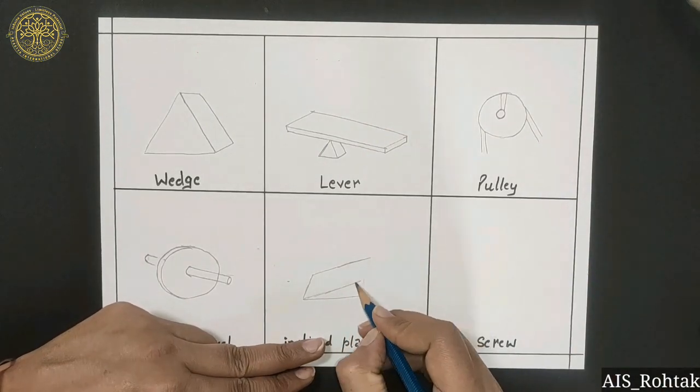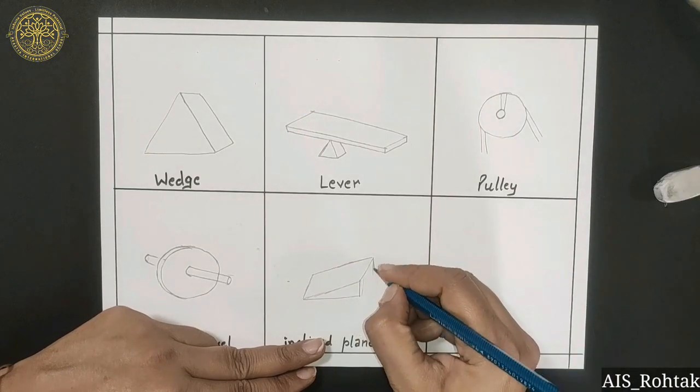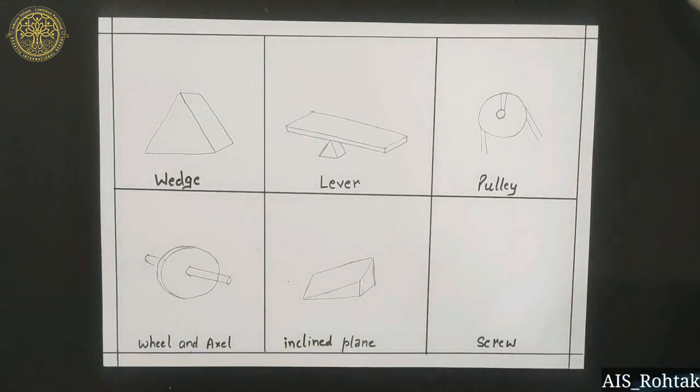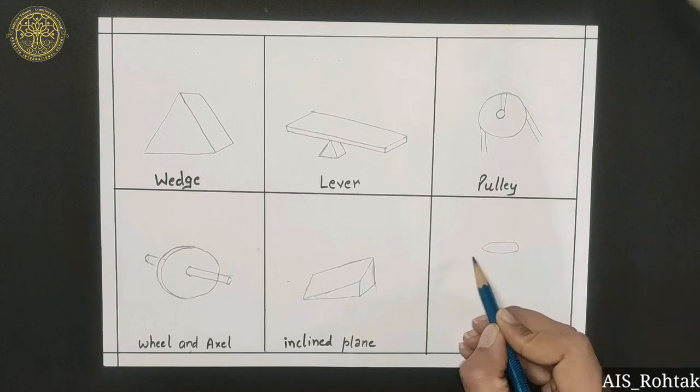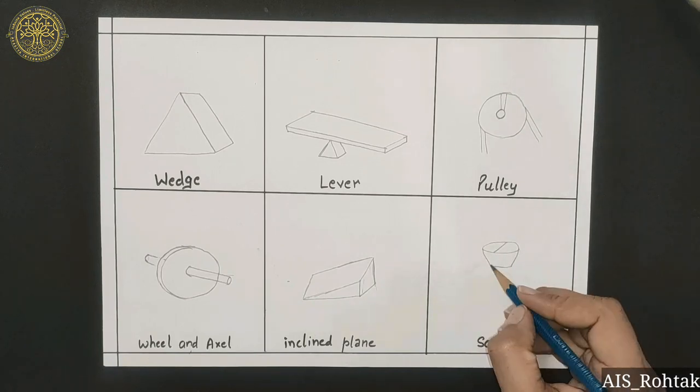Now draw the thickness of this inclined plane with the help of a straight line and slanting line like this. Now we are going to draw screw. For this we have to draw an oval shape, divide into half with a slanting line,